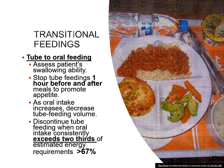When transitioning from enteral nutrition to oral feedings, it's important to obtain an assessment from speech pathology regarding the patient's swallowing ability — they'll do a swallowing evaluation. If the patient is able to swallow, encourage oral intake. If they're on tube feedings, the protocol is to stop the tube feedings one hour before or one hour after meals. As oral intake increases, we decrease the tube feeding volume in 10 ml increments. We can discontinue the tube feeding when the calorie count shows the patient is consuming approximately two-thirds of their energy requirements — about 66 to 67%.